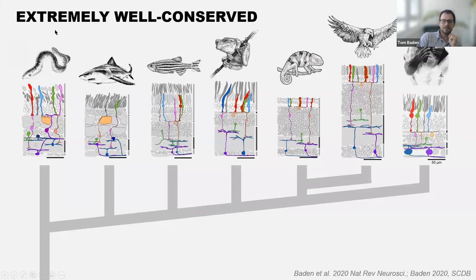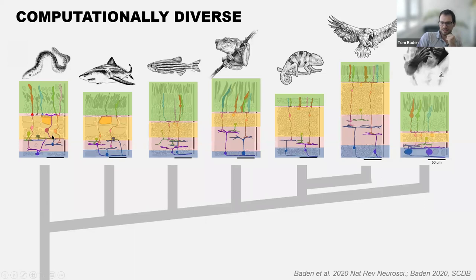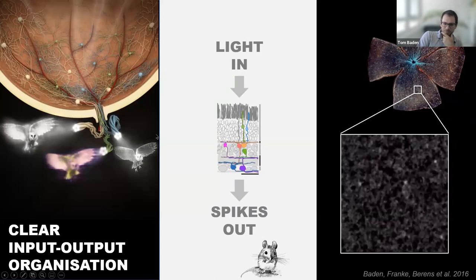It is an extremely well-conserved circuit, and yet computationally diverse. You can immediately see this if you just look at the density and thickness of layers. I've highlighted the input-output organization in green and blue, and all the stuff in between in yellow and pink. Across these species there's big diversity, and it's not a simple trend from simple to complicated — it really goes up and down with species, visual ecology, and many different factors.